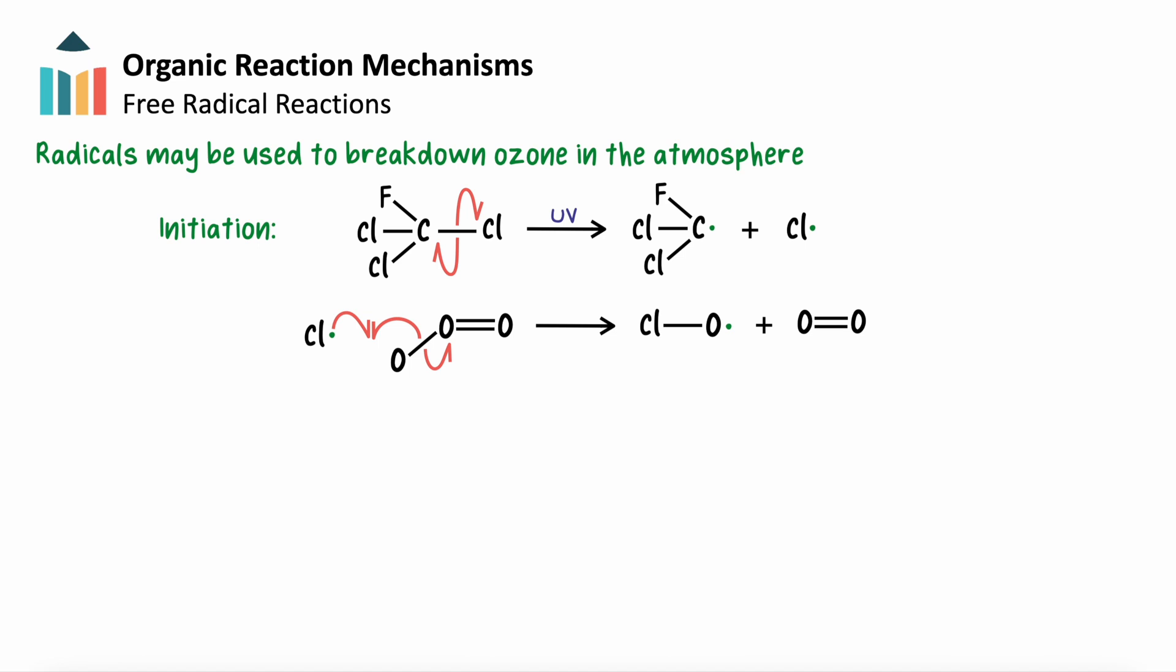The chlorine-oxygen radical can then react with another ozone molecule to form two more molecules of O2 and regenerate the chlorine radical. A reaction like this, where a radical is consumed and a new radical is then formed, is termed a propagation step, as it creates a chain reaction.